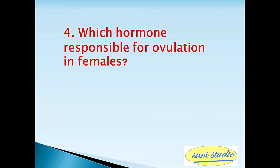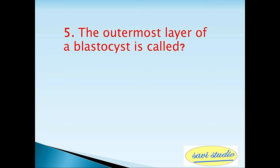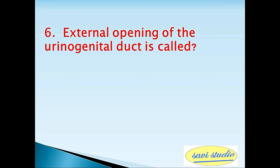Fourth question: Which hormone is responsible for ovulation in females? Answer: Luteinizing hormone (LH). Fifth question: The outermost layer of a blastocyst is called — answer: trophoblast. Sixth question: External opening of the urinogenital duct is called — answer: urinary meatus.